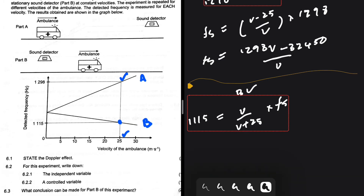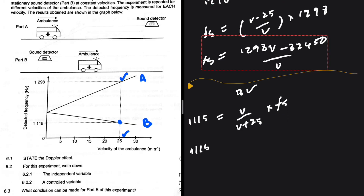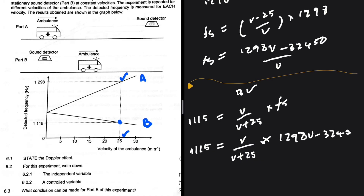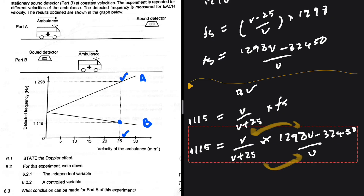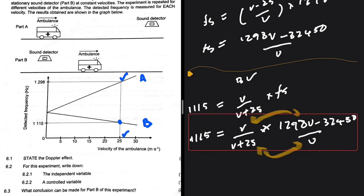Substituting into the second equation: 1115 = [v / (v + 25)] × [1298 − (32450 / v)]. We multiply the numerators and denominators together and solve for v. From this point it is essentially just algebra. I'm getting 328 meters per second as the final answer — let me know in the comments which answer you got.